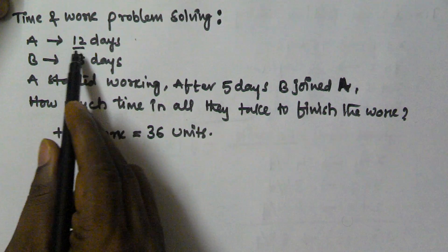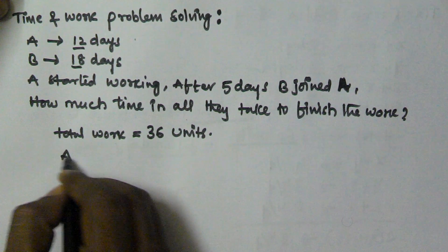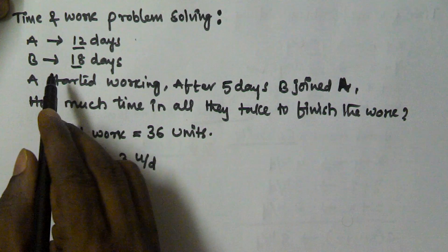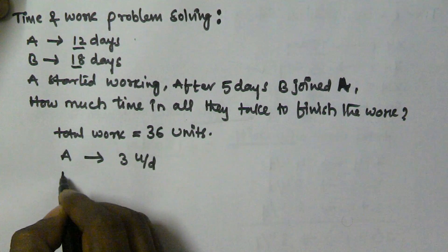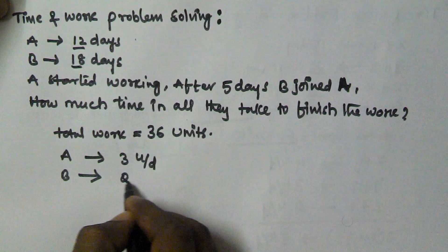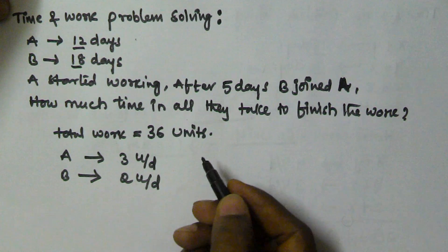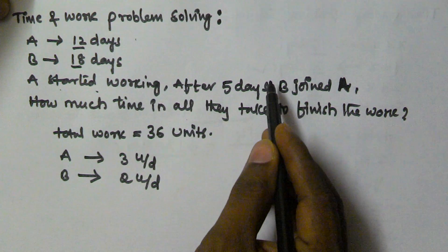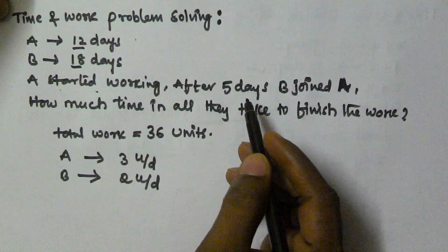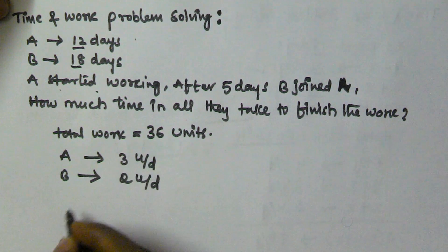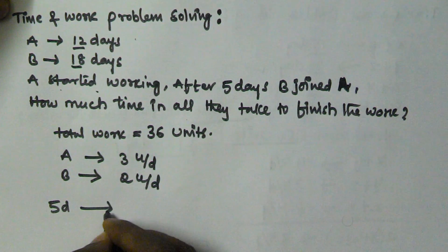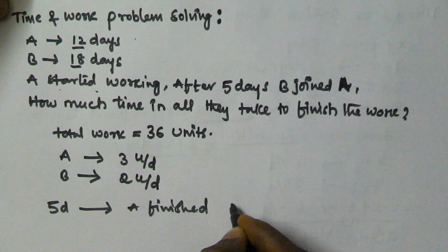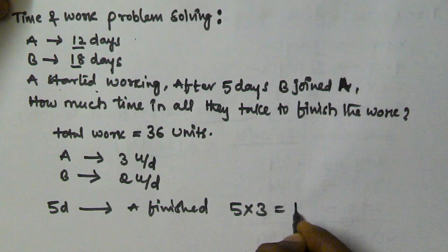A finishes the work in 12 days, that means A finishes 3 units per day. B finishes the work in 18 days, that means B finishes 2 units per day. According to the problem, A started working and after five days B joined A, so for the past five days A alone worked. In those five days, A finished 5 × 3 = 15 units.